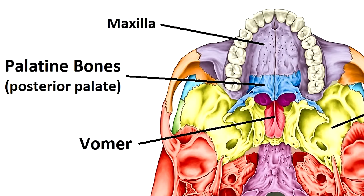Next we have the palatine bones. If you think about the roof of your mouth, you have what's known as the hard palate. Why is the hard palate hard? Because you have bones behind that tissue. The palatine bones make up the posterior part of your palate, so remember: the posterior palate is the palatine bone.